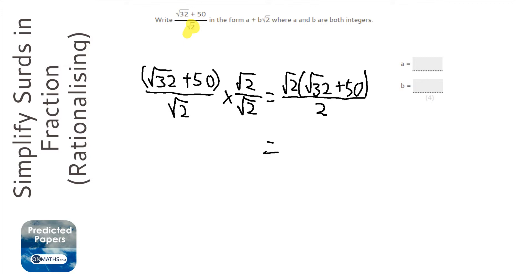Right, let's expand those brackets at the top. So root 2 times root 32 is going to be root 64 plus 50 root 2, all of that over 2.